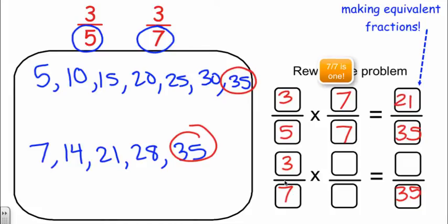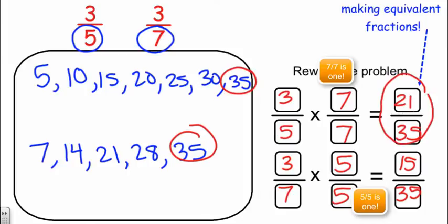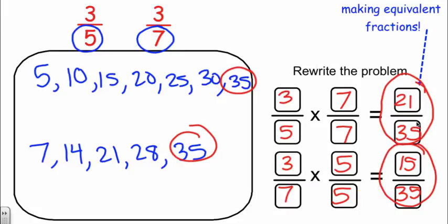Down below, how do I get from 7 to 35? I'm going to multiply by 5. I'm also going to multiply by 5 in my numerator. 3 times 5 is 15. So my two new fractions that have common denominators are 21 thirty-fifths and 15 thirty-fifths. Now that I have the same denominator and I've changed these into equivalent fractions for 3 fifths and 3 sevenths, now I could add or subtract these fractions if asked to.